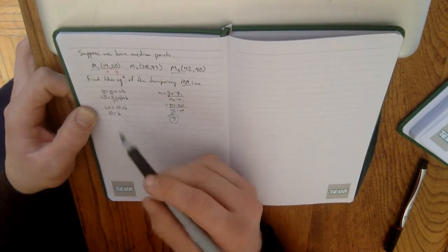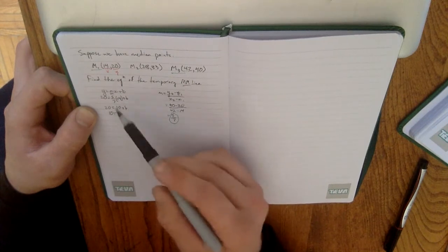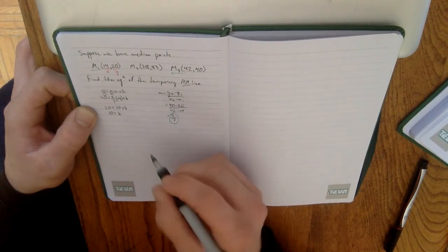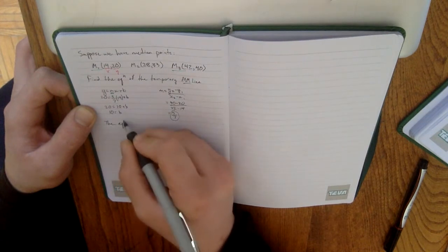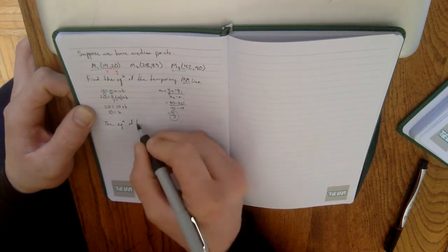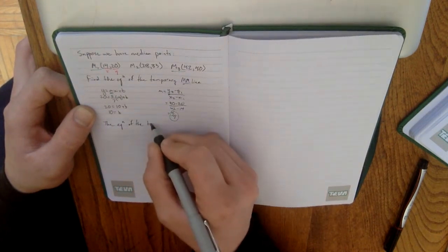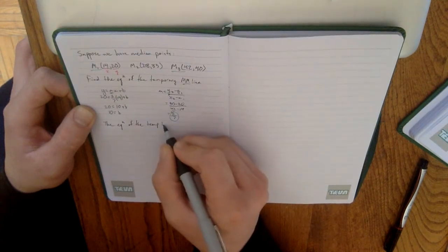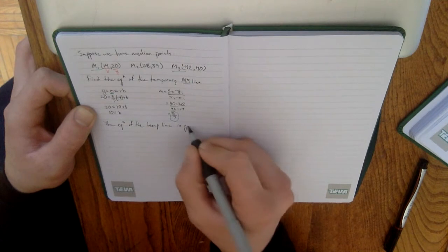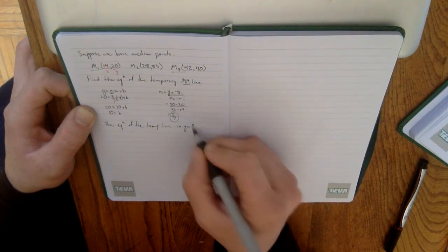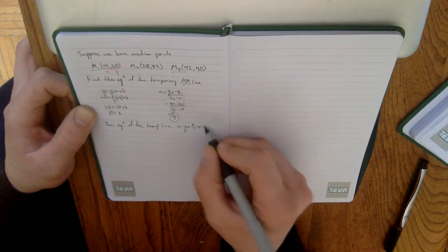Now, I did rush through the algebra there, but you can go back and verify that yourselves. So, the equation of the temporary line, and I'm just going to short form here to save some room, is y equals 5 over 7, x plus 10.